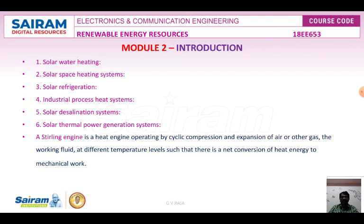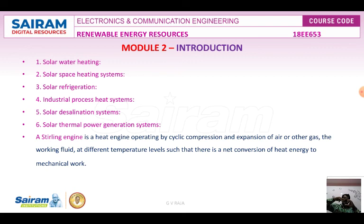Solar thermal power generation includes the parabolic trough system, the heliostat power tower system, the central receiver system, the parabolic dish system, and the Stirling engine system. The Stirling engine is a heat engine operating by cyclic compression and expansion — any temperature variation in the chamber causes compression and expansion, resulting in piston movement.